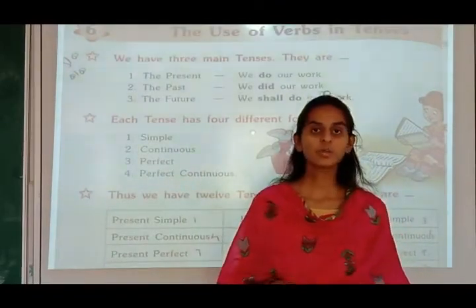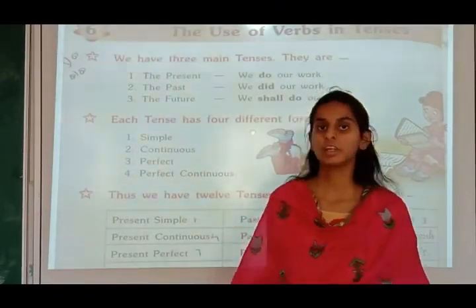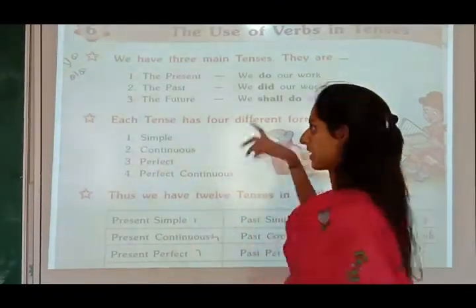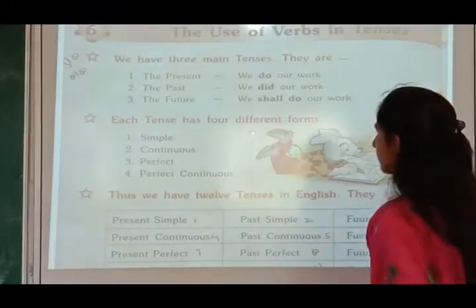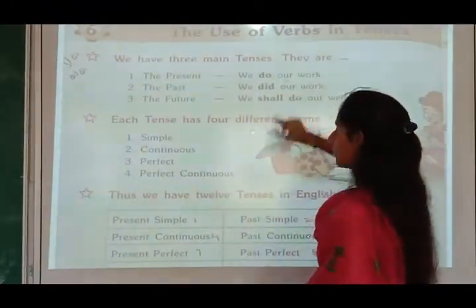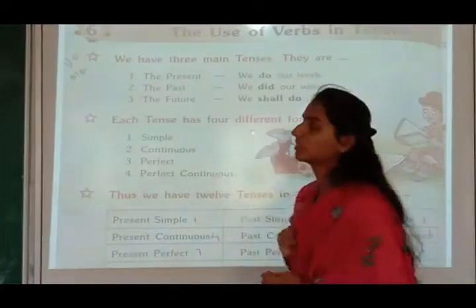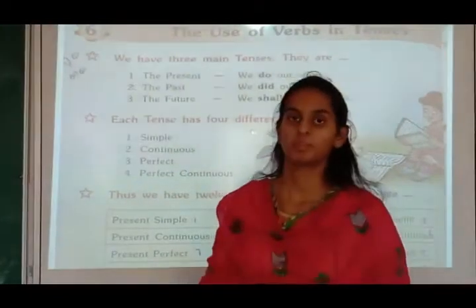So, where do we use verbs, which verb we use in tenses? There are three forms of tense. We have three main tenses: they are the present, the past, and the future.